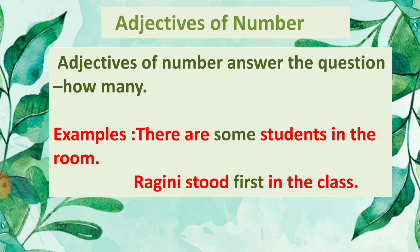The next type is adjectives of number. Adjectives of number answer the question 'how many?' For example, 'There are some students in the room' — how many? Some. 'Ragini stood first in the class' — here 'first' tells us the number she got. 'I have five pens in my box' — how many? Five. Adjectives of number answer the question 'how many?'